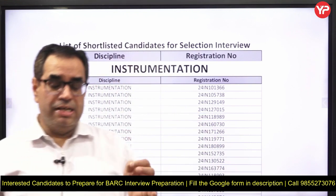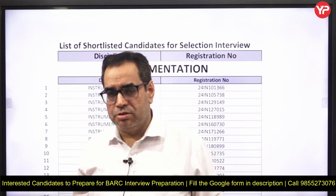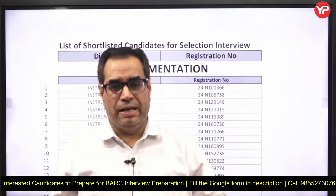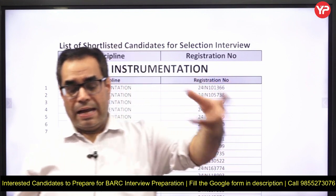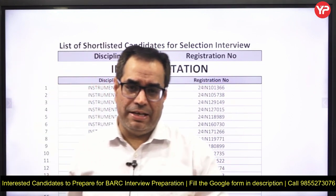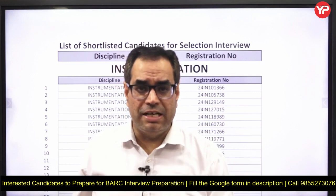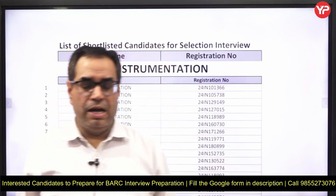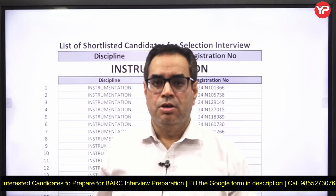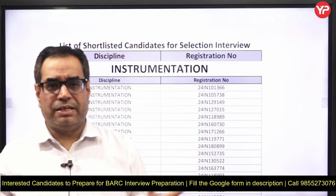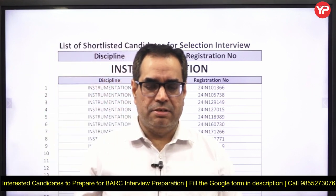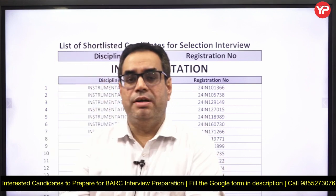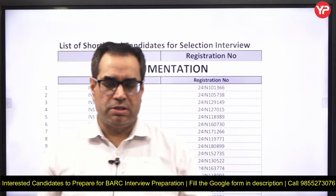The third subject is signals and systems, which is very important for instrumentation. Alternatively, you can go with analog electronics — mainly analog — because it contains operational amplifiers. Op-amp is the most important topic for instrumentation engineers in BARC interviews; you cannot ignore it. Analog also covers BJTs, CMOS, and different kinds of diodes.